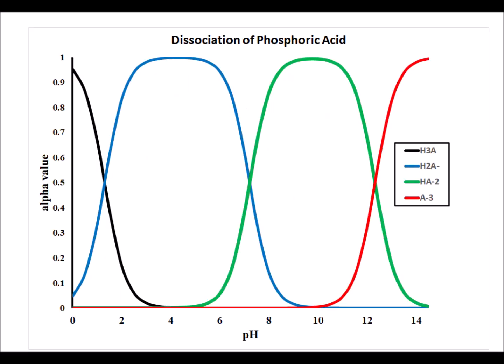And here is an example of what the Excel graph would look like for the data that we have mentioned in this video. To adapt this to any other triprotic acid, simply put the different Ka1, Ka2, and Ka3 values in cells K4, K5, and K6.